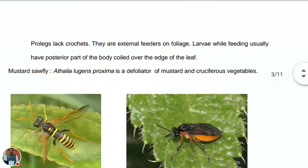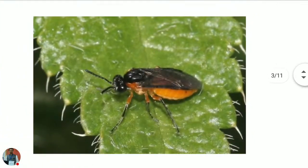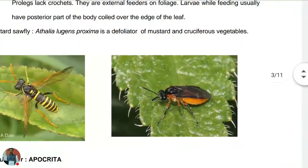The prolegs lack crochets. They are external feeders on foliage; while feeding, the larvae usually have the posterior part of their body coiled over the edge of the leaf. The mustard sawfly, Athalia lugens proxima, is a defoliator of mustard and cruciferous vegetables. The adult lays eggs on mustard and related crucifer crops.